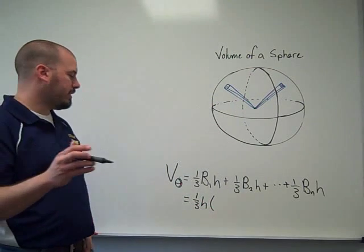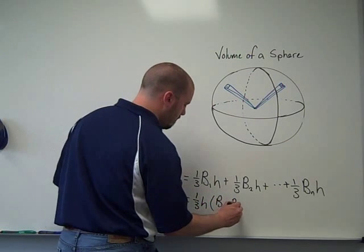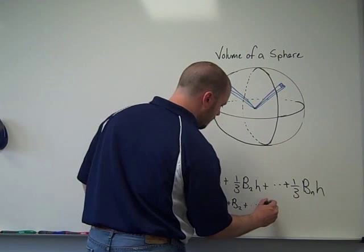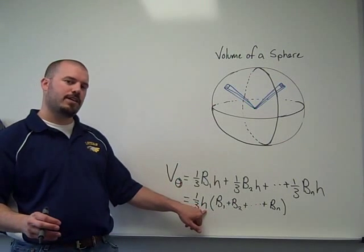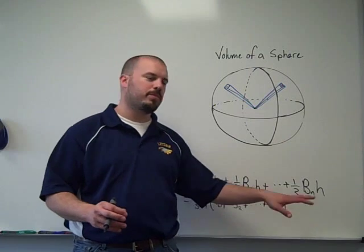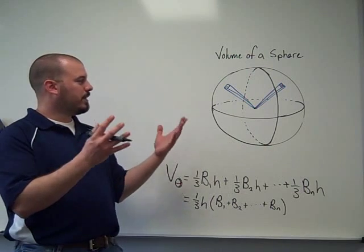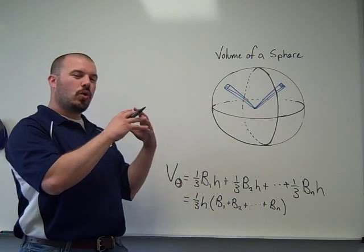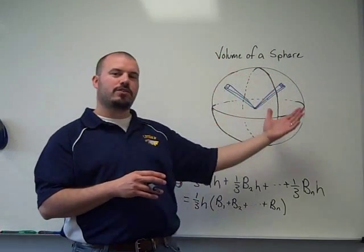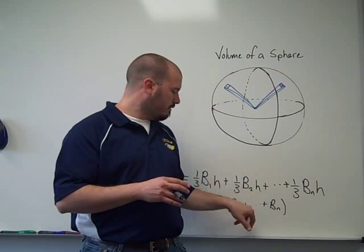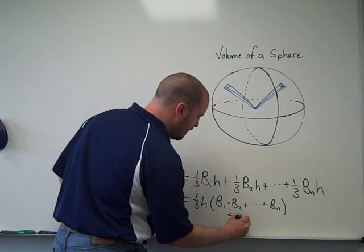So I'm going to factor out one-third times the height. And I end up with one-third of the height times base one plus base two all the way up through base n. What is base one plus base two all the way through base n? But if we think back to what I originally said, we're going to divide the whole sphere into these pyramids. So we're covering up the whole entire surface with these bases. So all of those bases essentially add up to the surface area of the sphere.